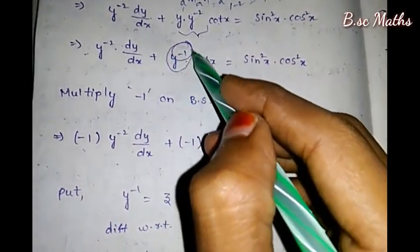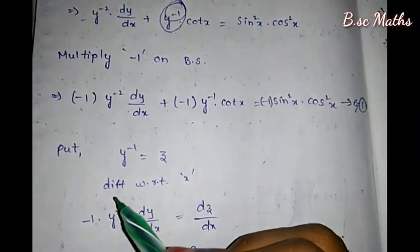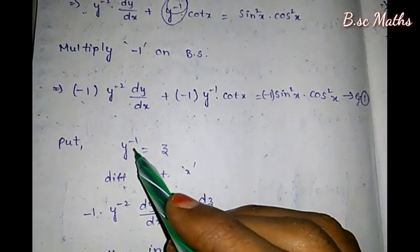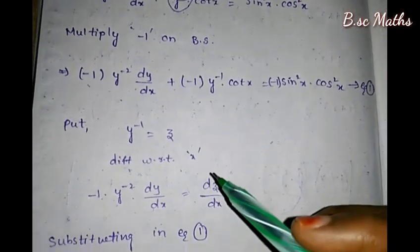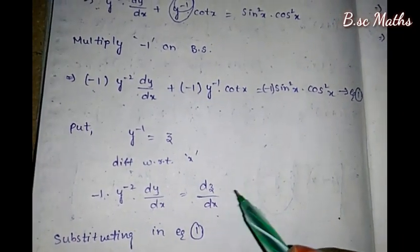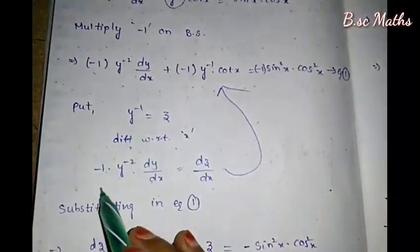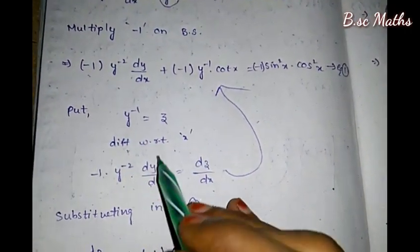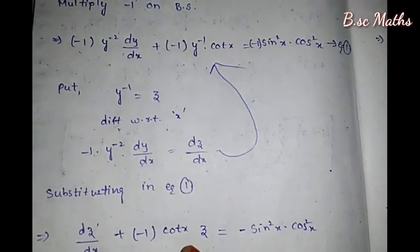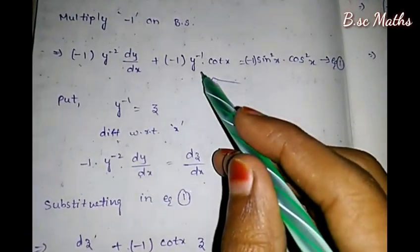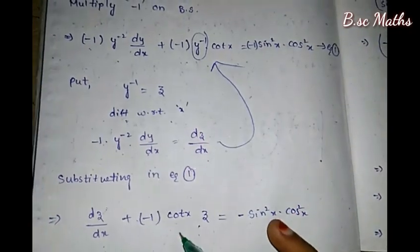Now let's put y inverse equal to z. So differentiation with respect to x gives: minus 1 times y to the power minus 2 times dy/dx equals dz/dx. Substituting these values into equation number 1, we have dz/dx.